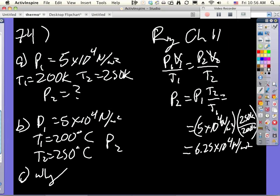So, then we just have T1 is going to be 473 Kelvin. T2 is going to be 523 Kelvin. So, now you can do that. So, P2 will once again equal P1 times 523 over 473.